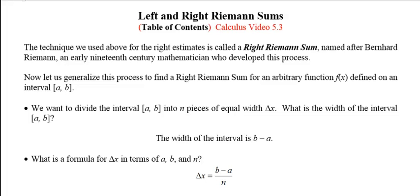And so we're going to be looking at ways of estimating that. The techniques we have already encountered are called right Riemann sums and left Riemann sums, named after Bernard Riemann. He was an early 19th century mathematician who developed this process.